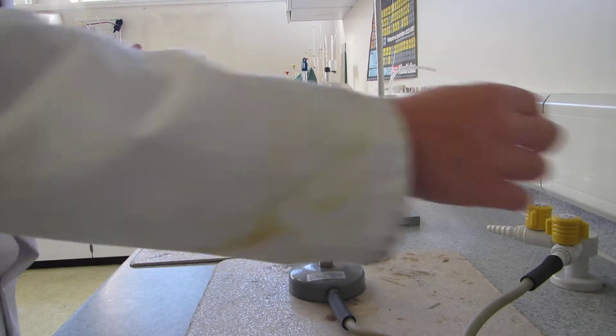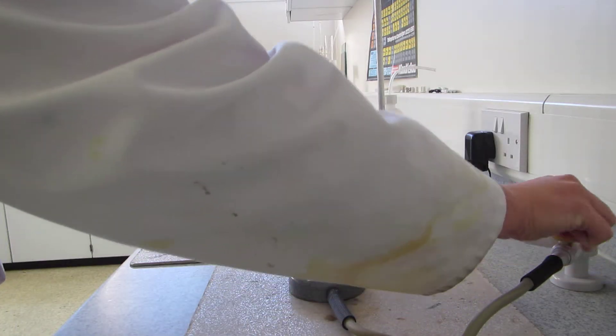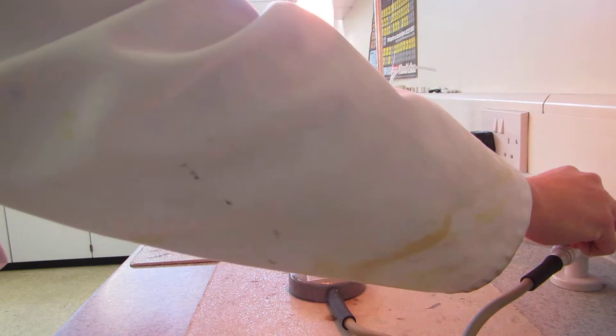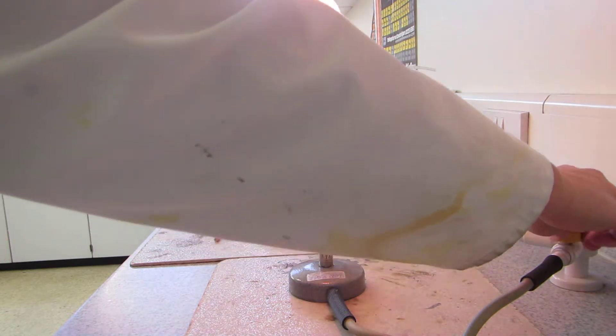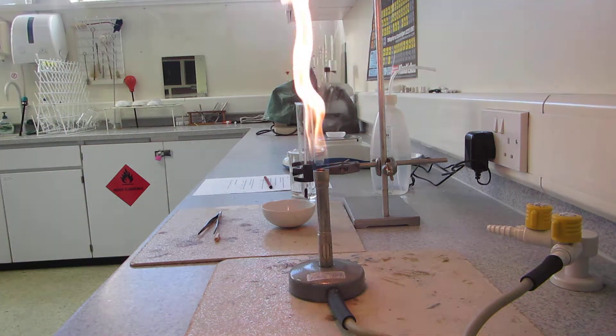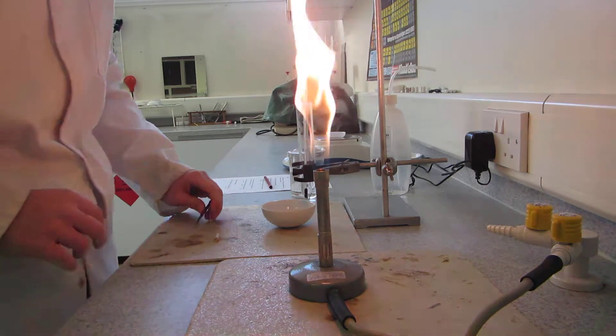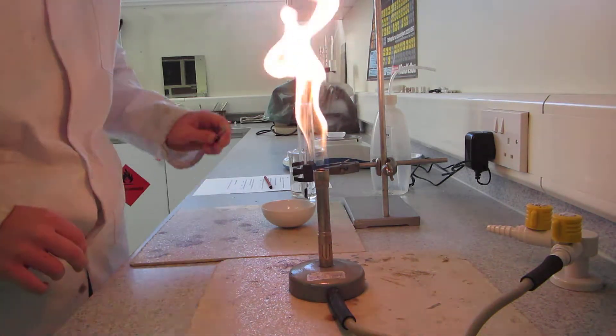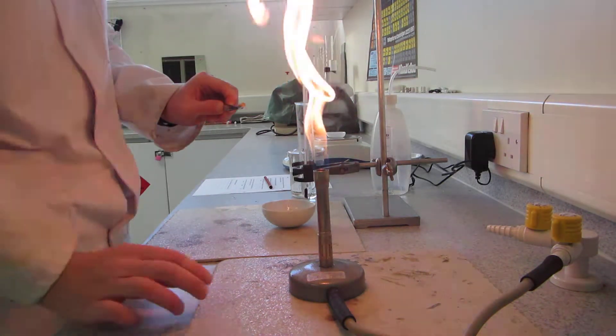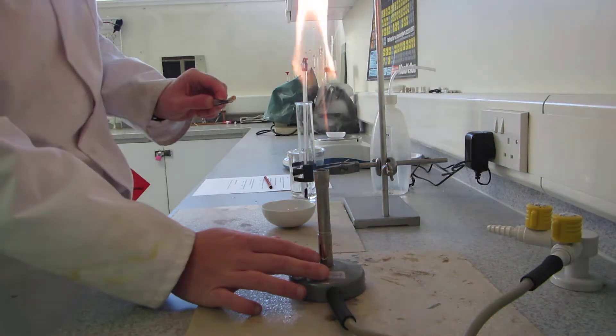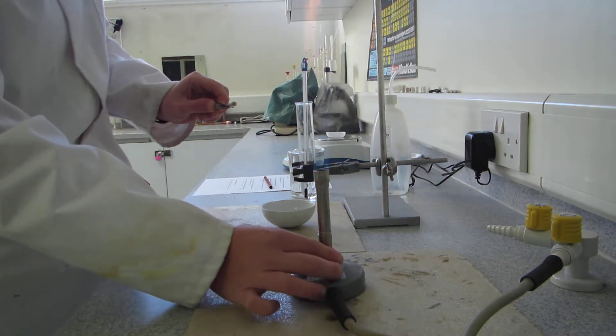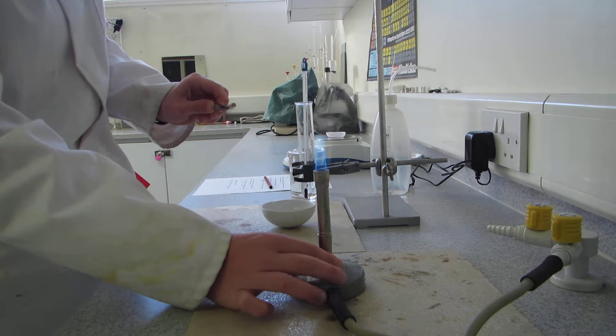Now I'll just light the Bunsen burner. Nice yellow safety flame. The problem with the safety flame is that it's not very hot. So I'll lift my wood chip with my tweezers and I'll open the air vent so that I've got a blue flame.